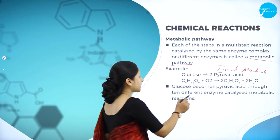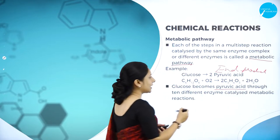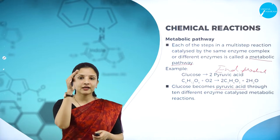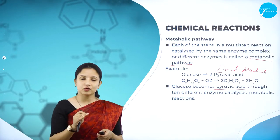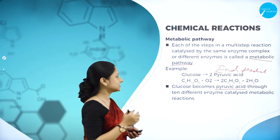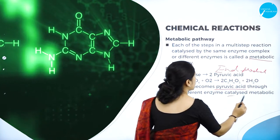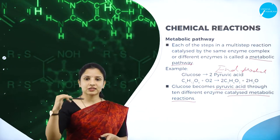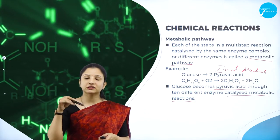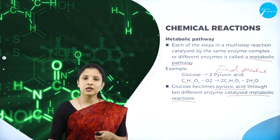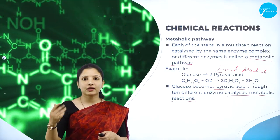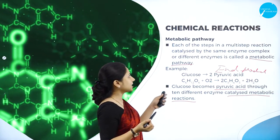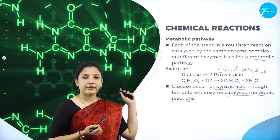Glucose becomes pyruvic acid through 10 different enzymes, each working in their own step. This multi-step process is why it is called a metabolic pathway, leading to a metabolic reaction.